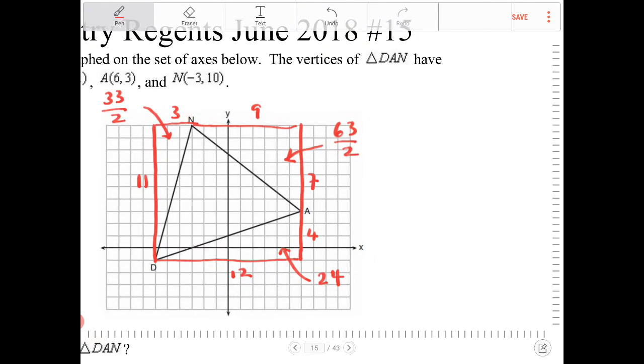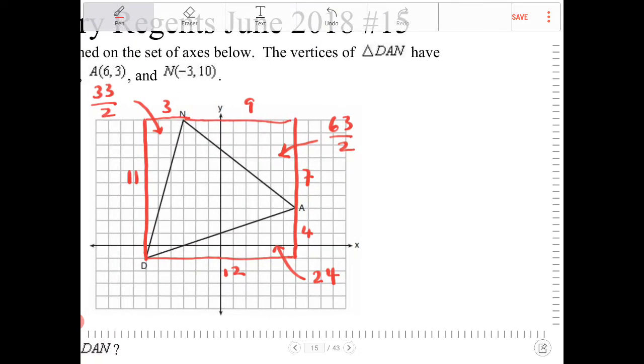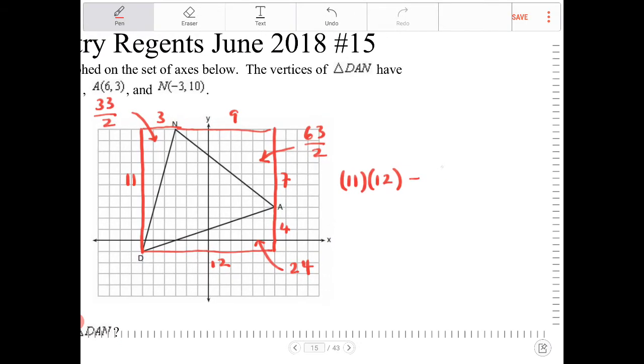Now I'm going to find the area of the overall rectangle. The area of the rectangle is 11 because that's the height, and the width is 9 plus 3, so that's 12. And I will be subtracting by 33 halves, subtracting by 63 halves, and subtracting by 24.